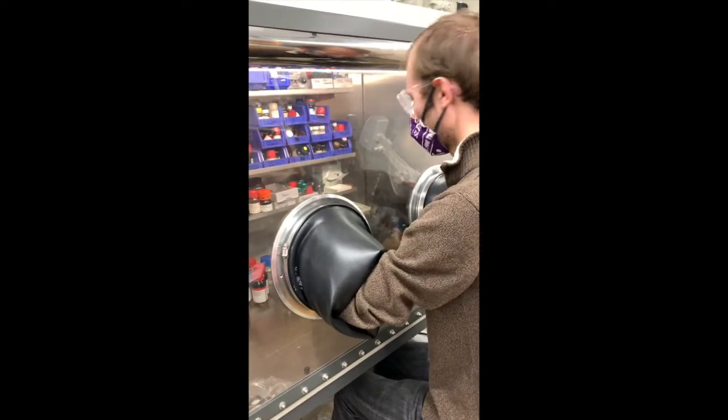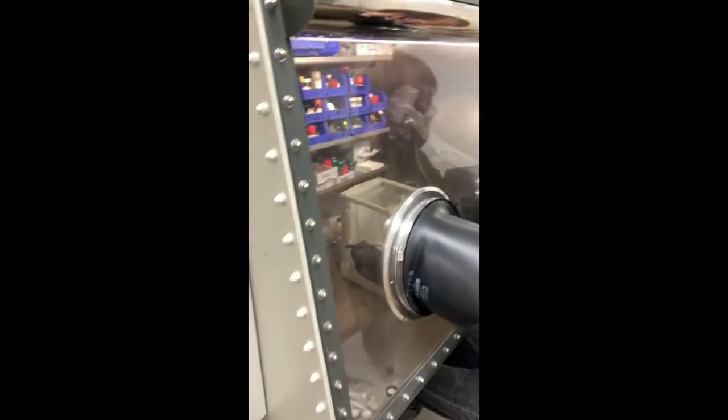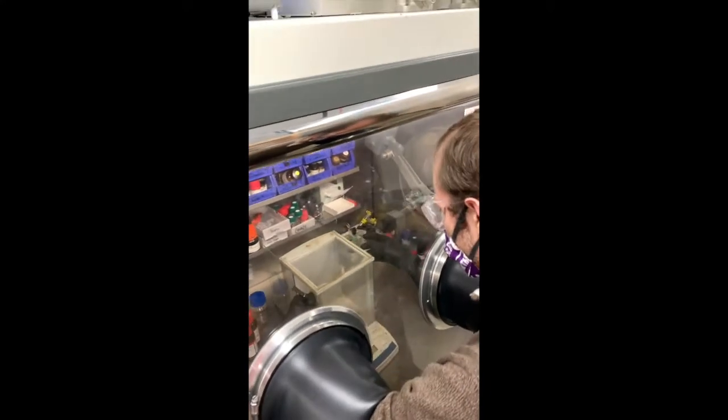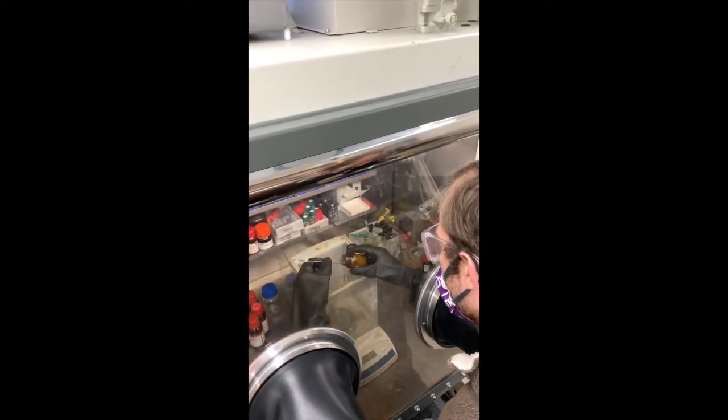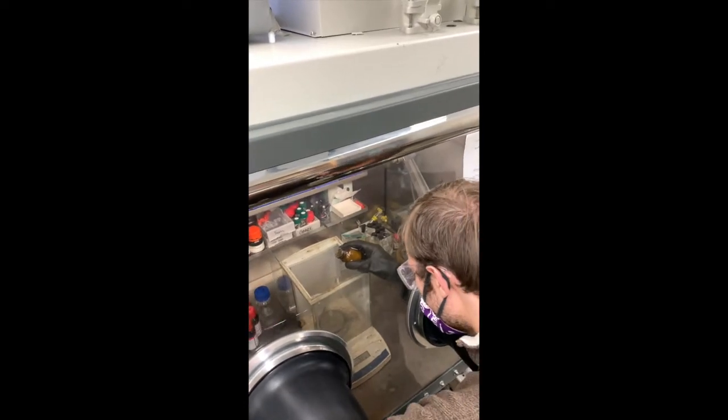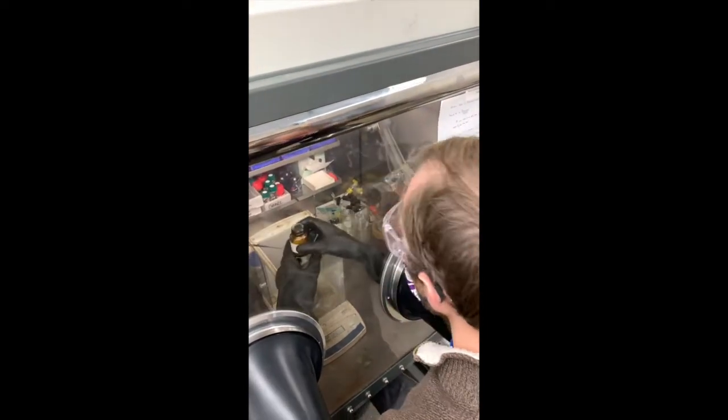So I'll grab a vial. We generally have a beaker of vials in here. Grab a vial, knock it over, put that on the balance. And today, I'm going to be getting some copper triflate. So I'll just weigh that out. Okay, perfect. 20 mg. That's exactly what I wanted.